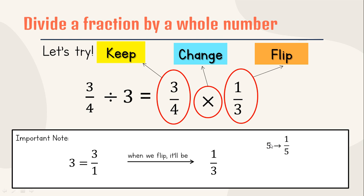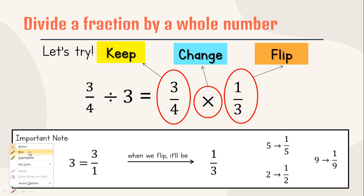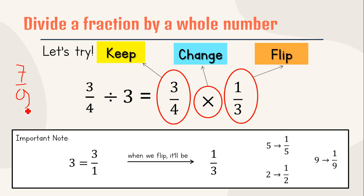For example: five, when we flip five it will be one per five, because five is actually five per one. Two becomes one per two, nine becomes one per nine. It is the same with, for example, a fraction like seven per nine — when you flip it, it will be nine per seven. Same rules.